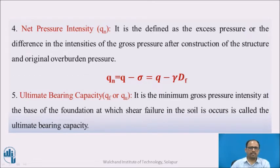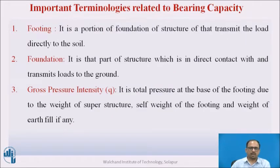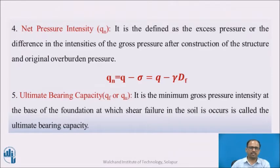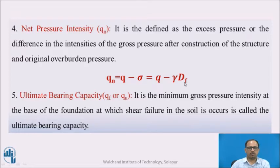The next term is net pressure intensity, denoted as Q_n. It is defined as the excess pressure, or the difference in intensities of the gross pressure after construction of the structure and the original overburden pressure. In gross pressure intensity we include overburden pressure, whereas in net pressure intensity we remove it. So Q_n = Q − σ, where σ is the overburden pressure, calculated as γ × D_F, where γ is the unit weight of soil and D_F is the depth of the foundation.